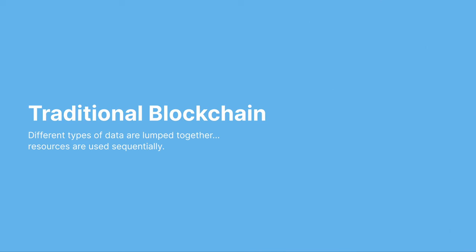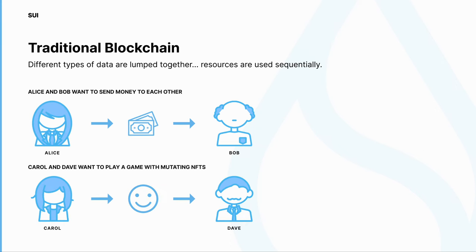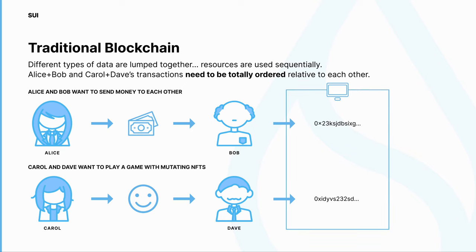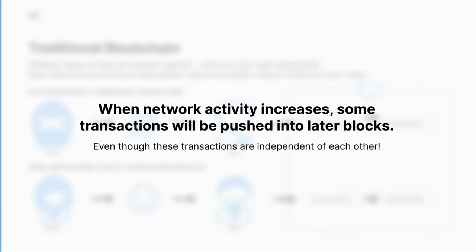Sui is a step function advancement in blockchain technology. In traditional blockchains, different types of data are lumped together and resources are used sequentially. When Alice and Bob send money to each other, and Carol and Dave play a game with mutating NFTs, all of their transactions need to be totally ordered relative to each other. When network activity increases, some transactions will be pushed into later blocks, even though most of these transactions are independent of each other.